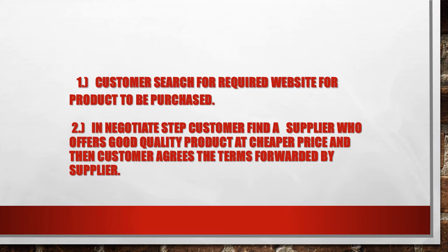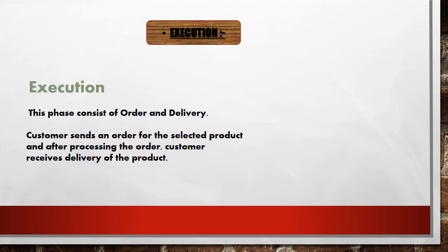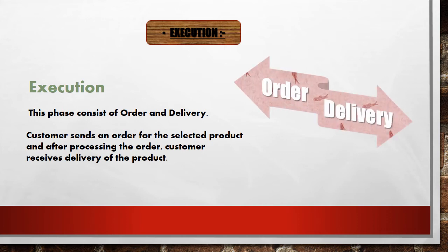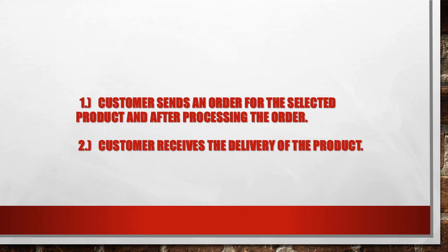In the pre-sale, the customer searches for the required site and the cheapest price. Now comes execution. Once you have searched and negotiated the product and have no issues, you are going to order it. In the execution phase, the customer sends an order for the selected product and after processing the order, the customer receives delivery of the product. So execution has two steps: ordering the product and receiving the delivery.